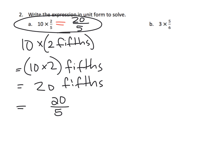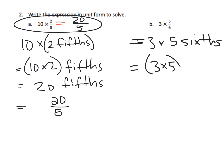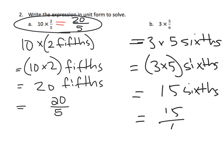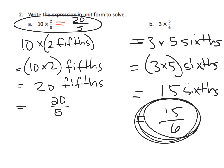Similarly, three times five-sixths is the same thing as three times five-sixths, which equals fifteen-sixths. That's really all we care about — and eventually in this very lesson, students will be able to see the problem and immediately go to the answer with the least amount of work.